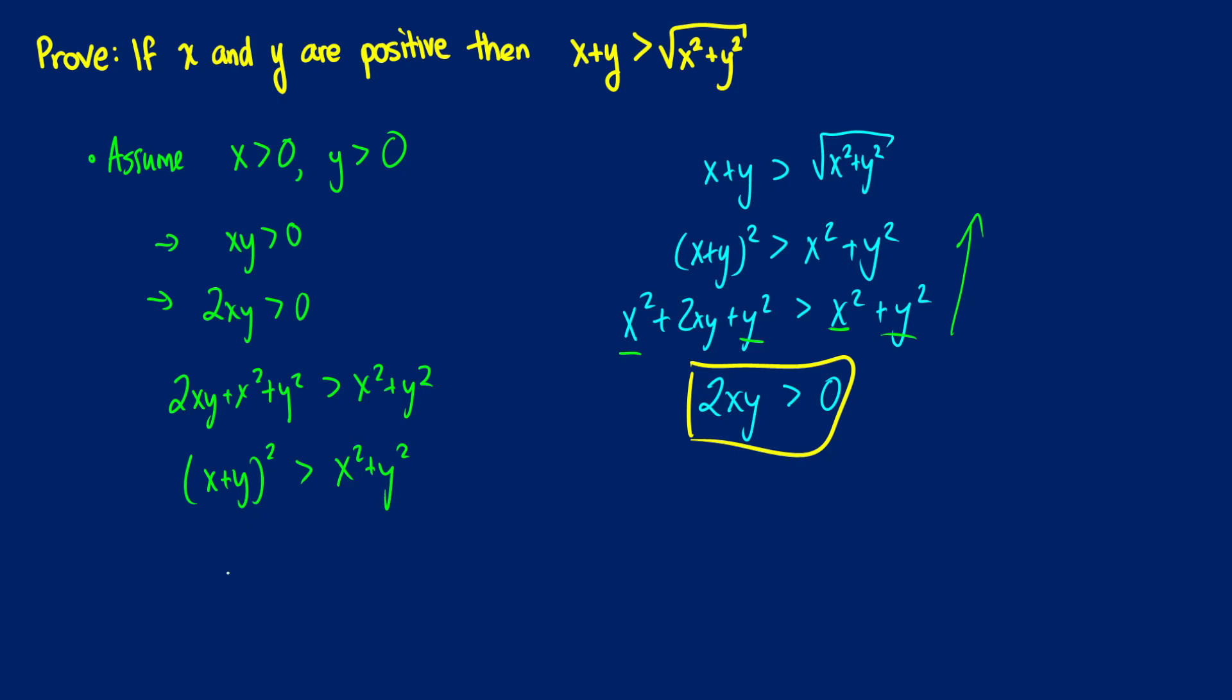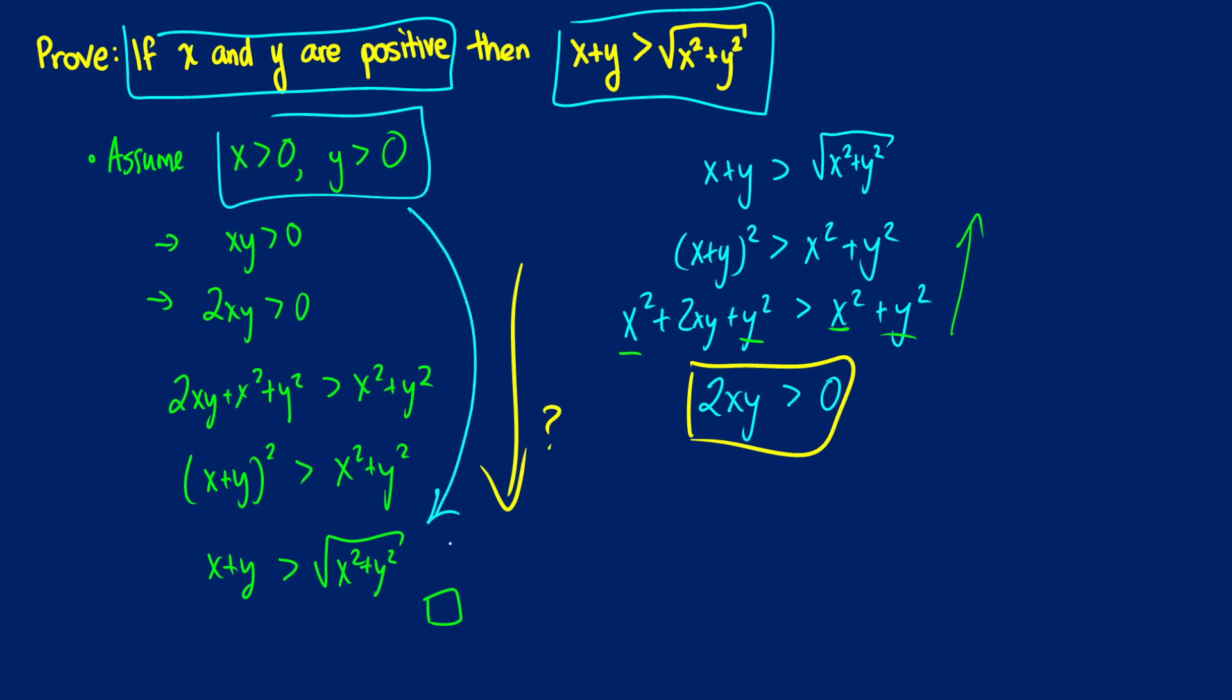And now we just take the square root of both sides. So we get x plus y is greater than the square root of x squared plus y squared. And you might think, we just did all this stuff on the right, so why do we have to do this? Well, it's because of the direction of the proof. It says if x and y are positive, then x plus y is greater than the square root of x squared plus y squared. So we start with these assumptions and we have to build to our end result.